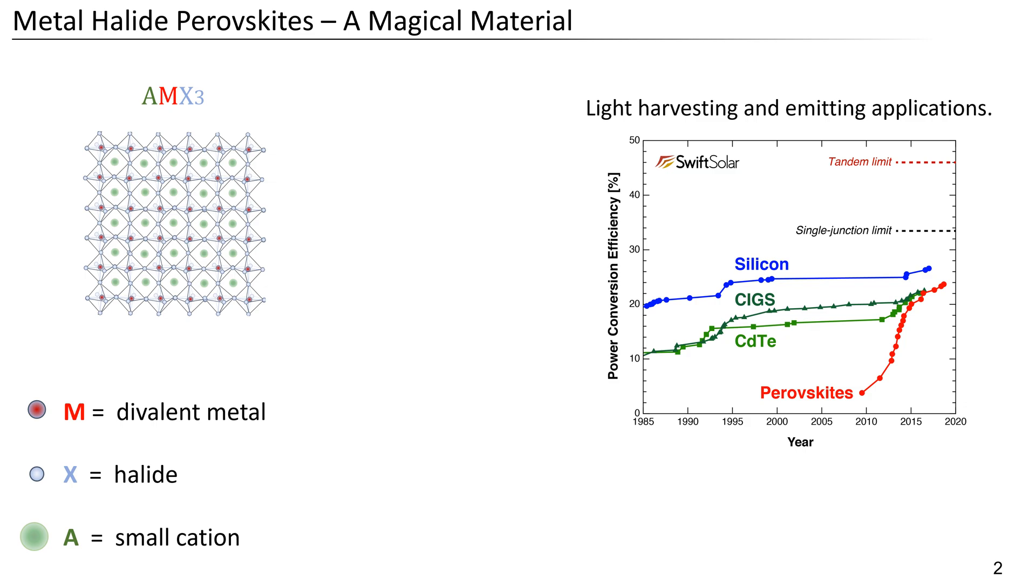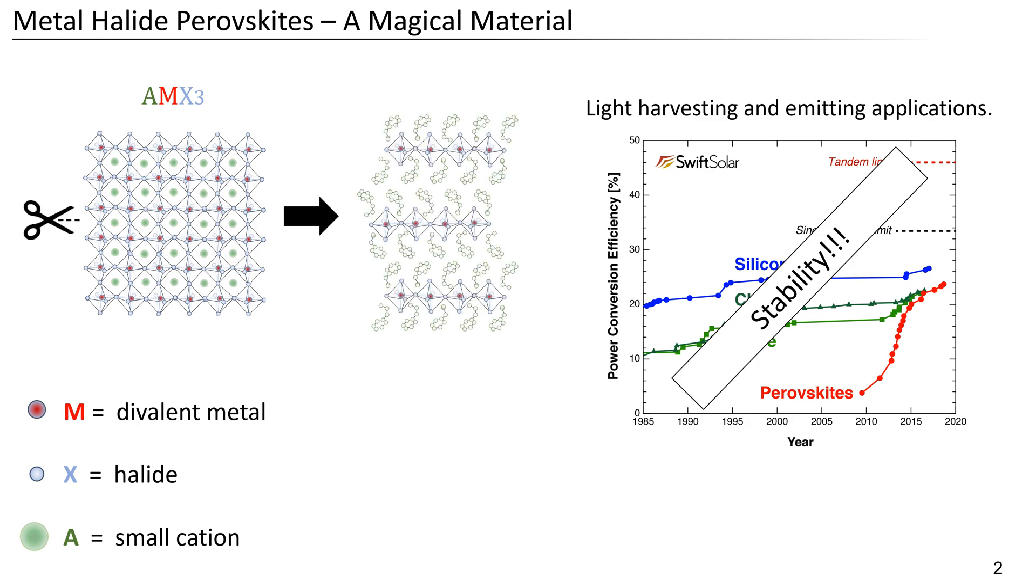While perovskites have an incredible amount of positive properties, one of their biggest drawbacks is their chemical stability as perovskites tend to degrade readily when exposed to ambient conditions. However, by introducing larger organic cations it is also possible to form these 2D perovskites, which have shown to have better chemical stability.